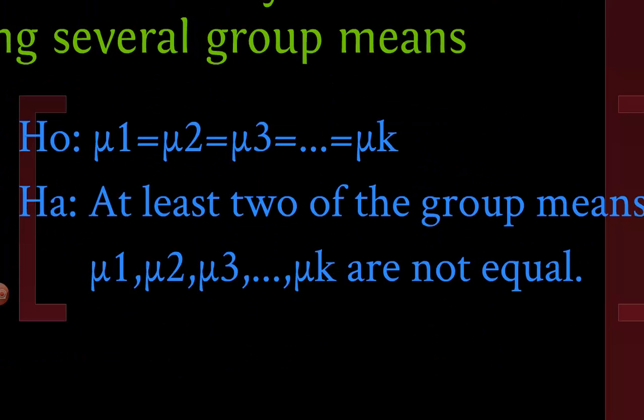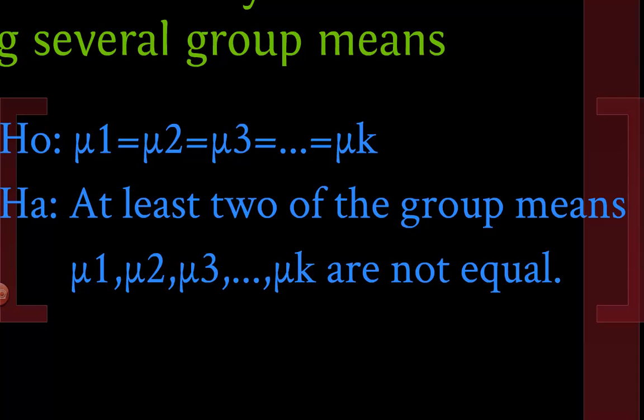So we're going to be testing is mean 1 equal to mean 2, mean 3 equal to mean 4, all the way up until however many. We can do this for 3 or 300. Our null hypothesis is that they're all equal, and the alternative is that at least one of them is different from another one. So if that fails, then they are not all equal and therefore we have the alternative.